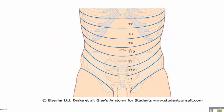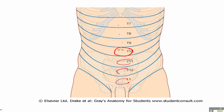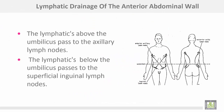This figure shows the distribution of cutaneous nerves to the skin of the anterior abdominal wall: the region of the umbilicus is supplied by the 10th thoracic, with three above (9th, 8th, 7th) and three below (11th, 12th, and first lumbar), and also the external genitalia from the first lumbar. Regarding lymphatic drainage: lymphatics above the umbilicus pass to axillary lymph nodes, while lymphatics below the umbilicus pass to superficial inguinal lymph nodes.